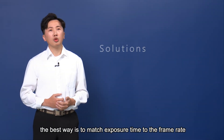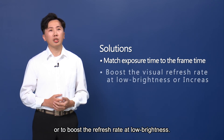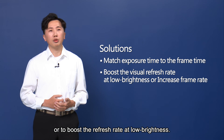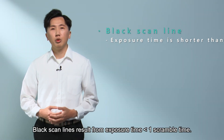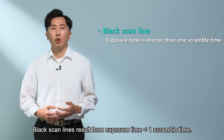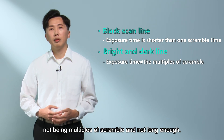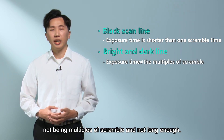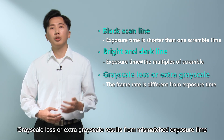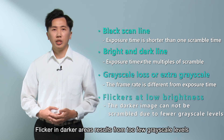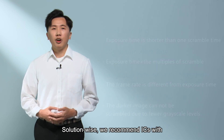The best solution is to match exposure time to the frame rate, or to boost the refresh rate at low brightness. To sum up: black scan lines result from exposure time less than one scramble; bright and dark lines result from exposure time not being a multiple of the scramble; grayscale loss or extra grayscale results from mismatched exposure time and frame rate; and flicker in darker areas results from too few grayscale levels that can't be scrambled.